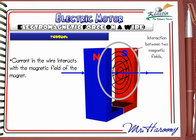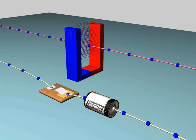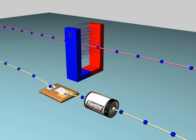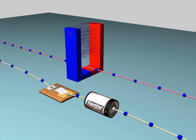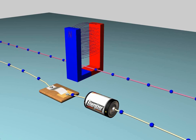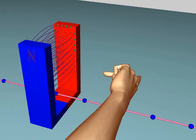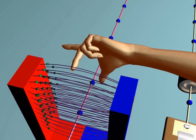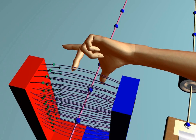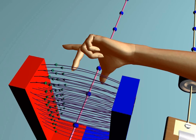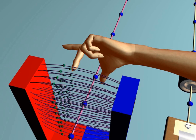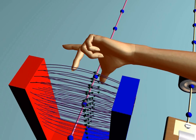Another suitable explanation is that current in the wire interacts with the magnetic field of the magnet, causing force on the wire. Now the question is: can we predict the direction that the wire will be pushed? The answer is yes. The rule that tells us the direction of the force is named Fleming's left hand rule.